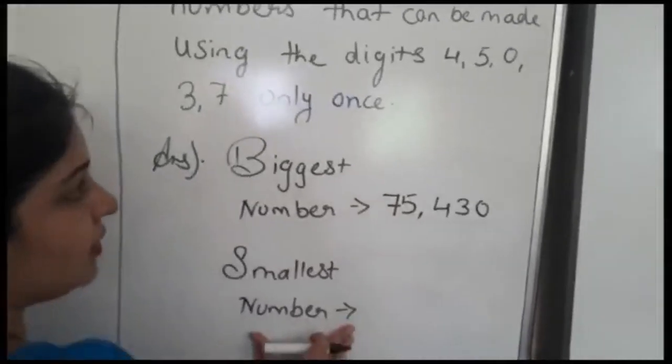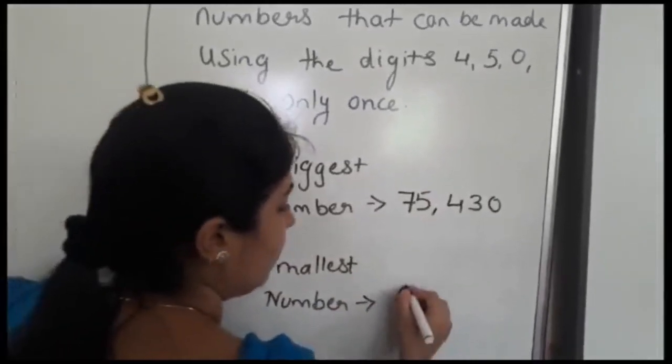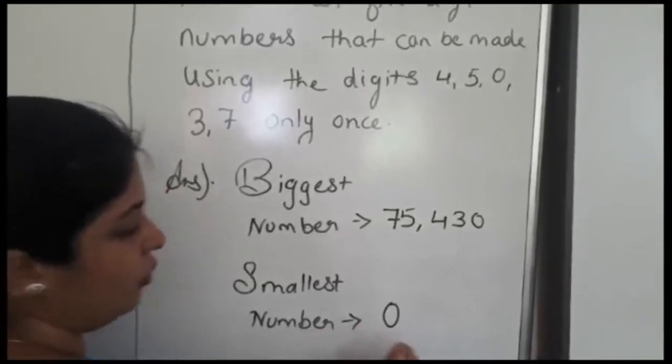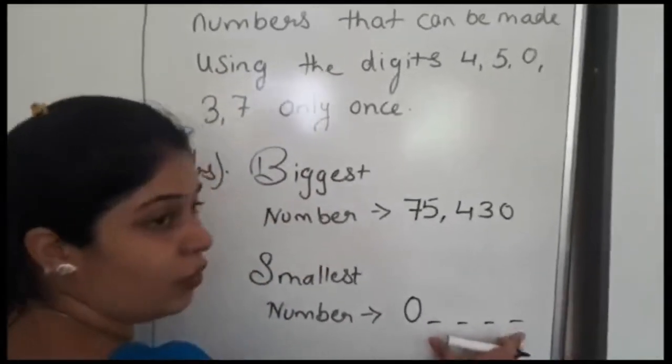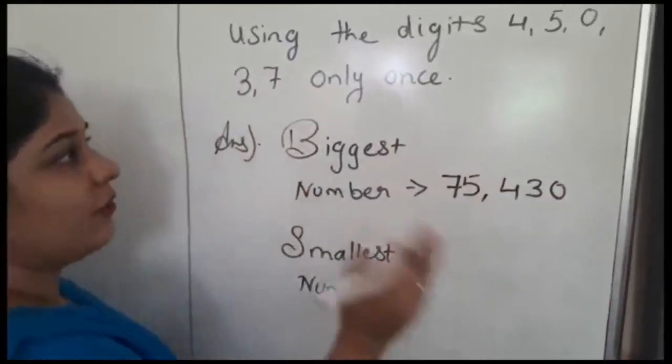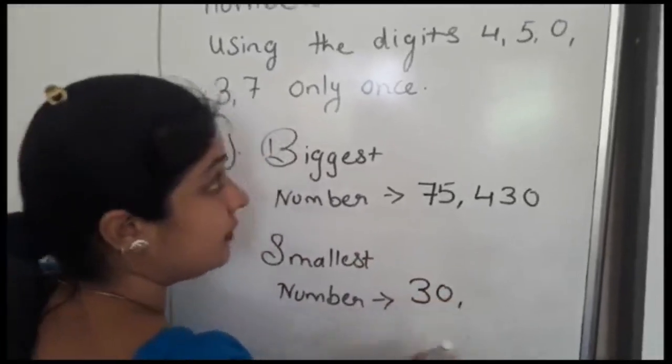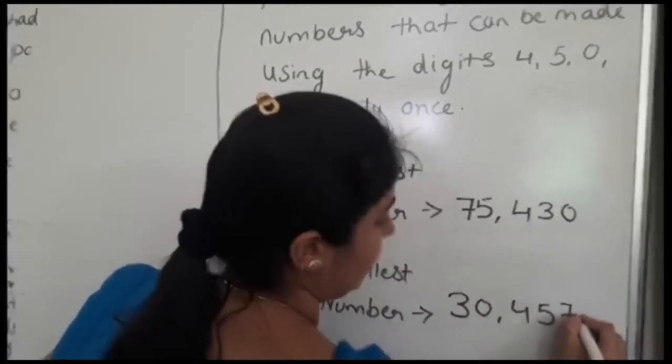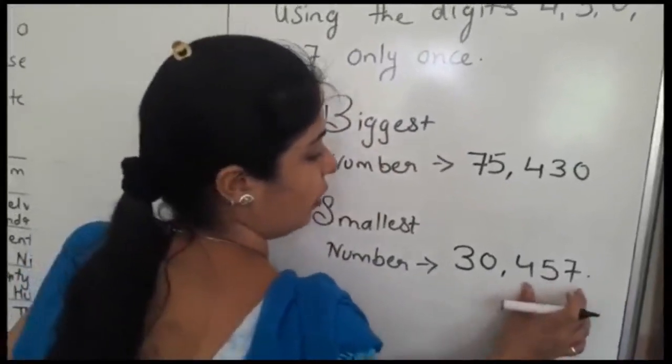Now smallest number. Let's start with the first smallest number that is 0. Can we write 0 at the first place? No, because 0 has no value. If we write other 4 digits behind 0, the number becomes a 4 digit number. So we have to use 0 at the second place. First we will use the second smallest number that is 3, then 0, then smallest number 4, then 5, then 7. The smallest number we got is 30,457.